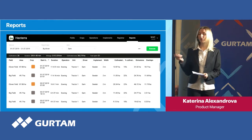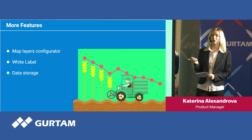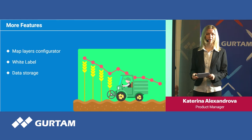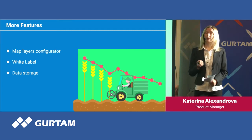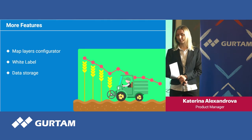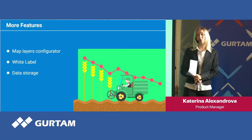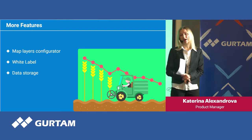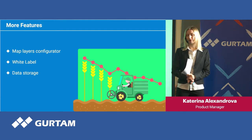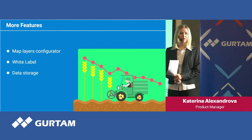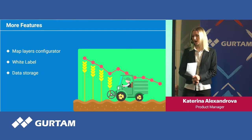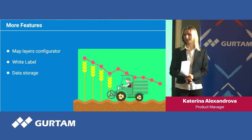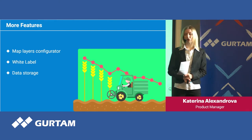Briefly, those are the main functions. As an advanced feature, we have a map layer configurator which helps to add almost any map layer you want — cadastral maps, weather, NDVI, satellite maps, or any other layer or overlay — as long as you have the necessary access keys and links. We also have the option of a white label and good data storage conditions.